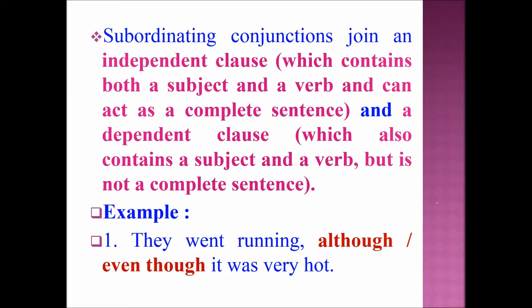Subordinating conjunctions join an independent clause and a dependent clause. An independent clause contains both a subject and a verb and can act as a complete sentence. A dependent clause also contains a subject and a verb but does not have a complete meaning. Example sentence: 'They went running although it was very hot.'